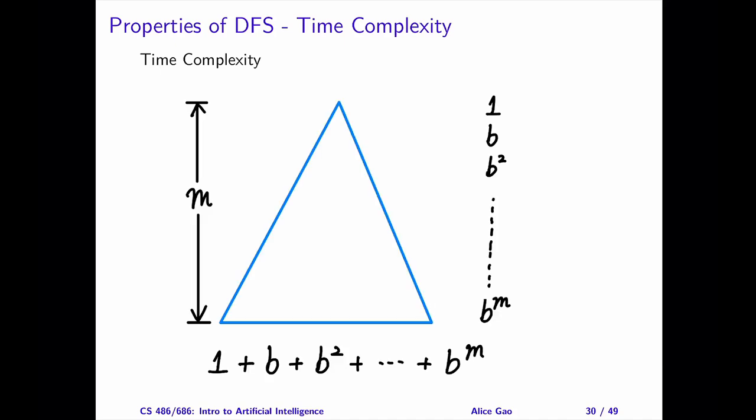The tree has M levels. As we move down in the tree, the number of nodes on each level increases exponentially. Level 0 has one node, level 1 has at most B nodes, level 2 has at most B squared nodes.